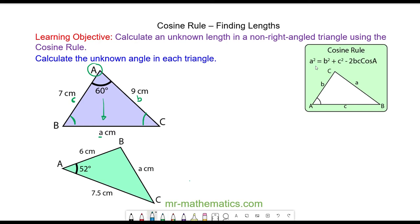So we have the formula a squared is equal to b squared plus c squared minus 2bc cos A. There's a link in the description to show how we derive this formula using right angle trigonometry. It's important to watch that.